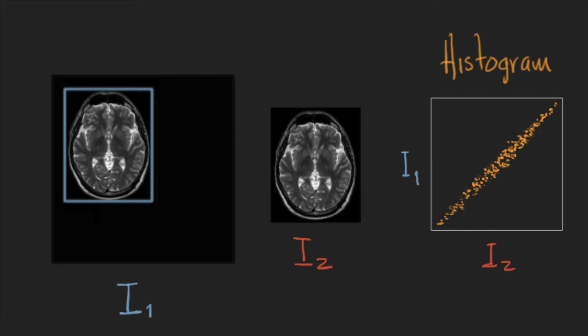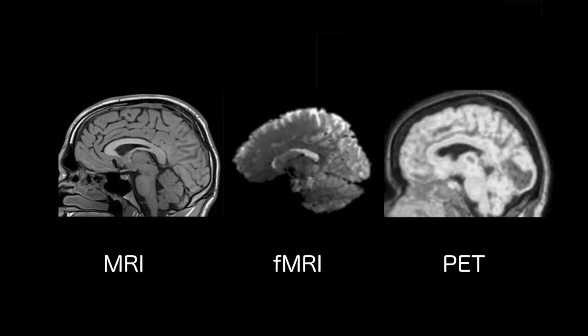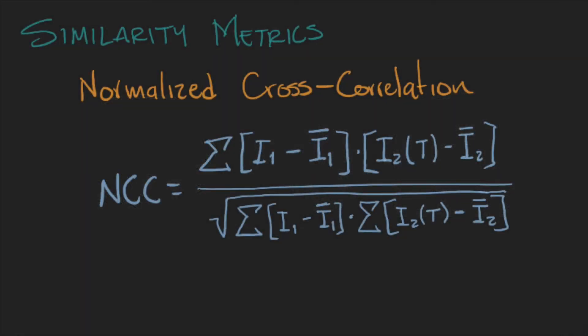Then calculating the correlation sounds like a good way to go, but in real life this is not the case. Remember that our images might have different characteristics, so just looking at simple correlation won't give you the best result. We need a better way to measure similarity. One way is to calculate the normalized cross-correlation. This metric centers the data by removing the mean of each image, and then we multiply the intensities of the first image by the second image after the transformation, and normalize the result to be between 1 and minus 1.